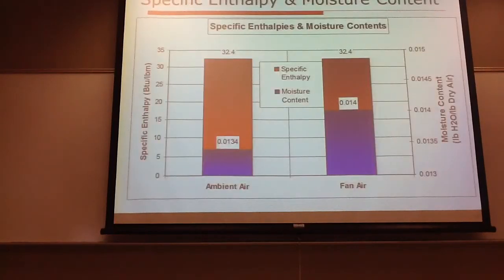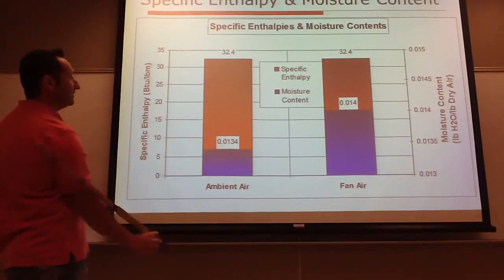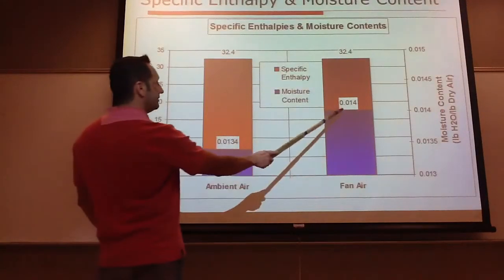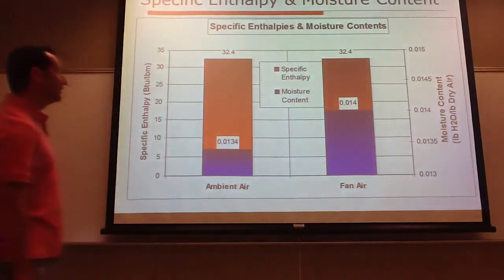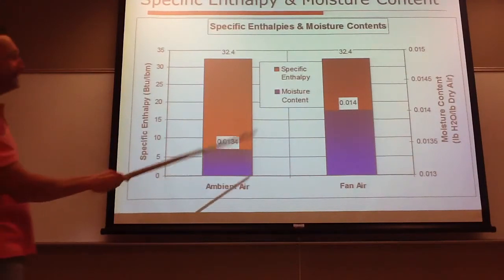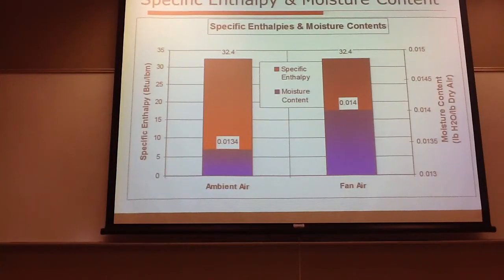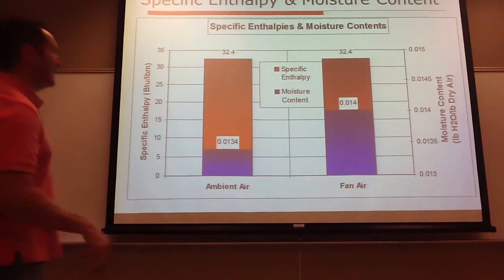The psychrometric chart was used to calculate the specific enthalpy and the moisture content. So for the ambient air, you got 0.0134 for the specific enthalpy. And for the fan air, you got 0.014 for the specific enthalpy. And those were in BTUs per pound for the specific enthalpy. And then the moisture content was in pounds of H2O per pound of dry air.